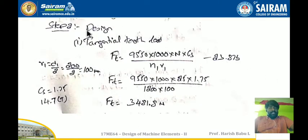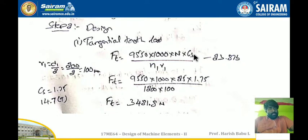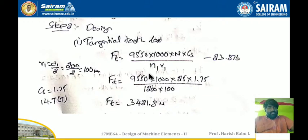For the design step, first I calculate the tangential tooth load: FT = (9550 × 1000 × N × CS) / (N1 × R1). The service factor CS is selected from table 14.7, since this is a compressor operating continuously, giving CS = 1.75. R1 = D1/2 = 200/2 = 100 mm. Substituting all values, FT = 3481.8 N.